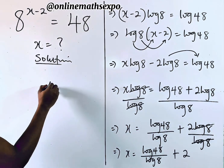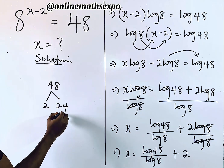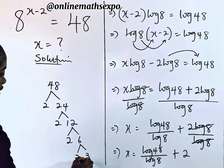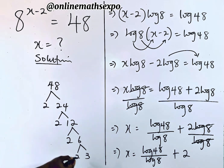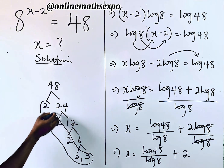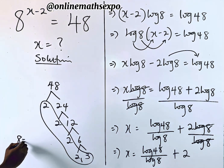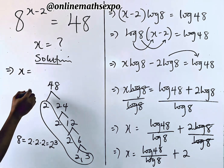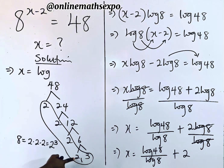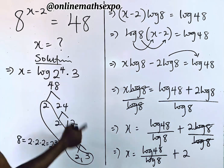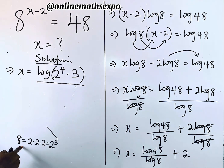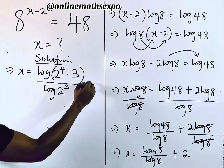Now, 48 equals 2×24, and 24 = 2×12, 12 = 2×6, and 6 = 2×3. So 48 = 2 to the power of 4 times 3. Also, 8 = 2 multiplied three times, which is 2 cubed. So we rewrite x as log(2^4 × 3) divided by log(2^3), plus 2.